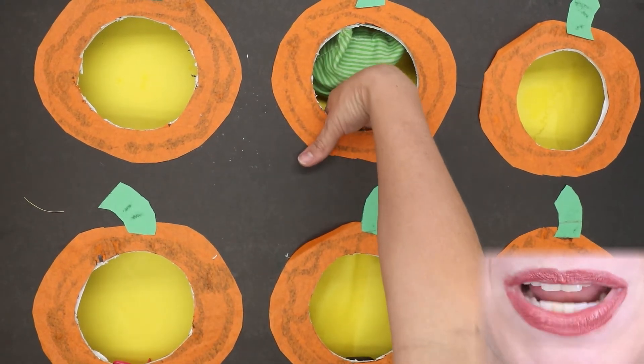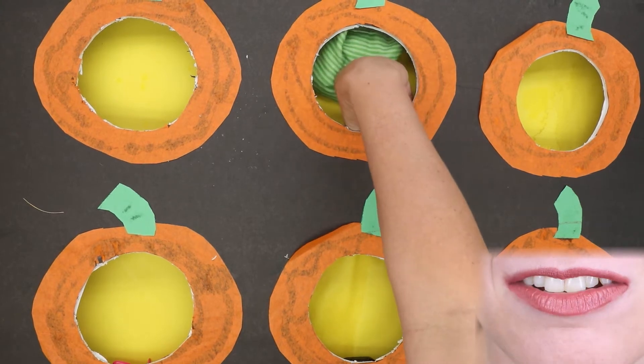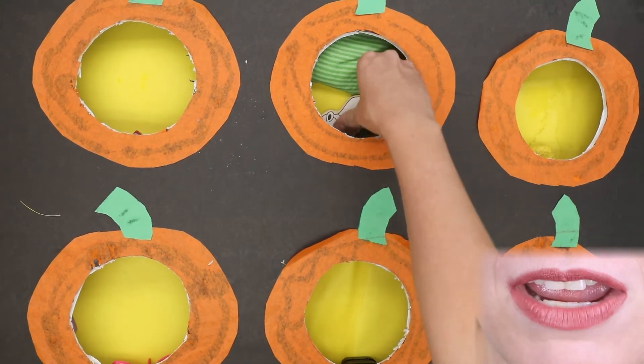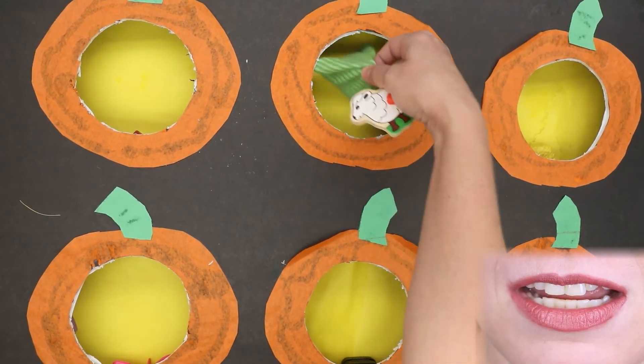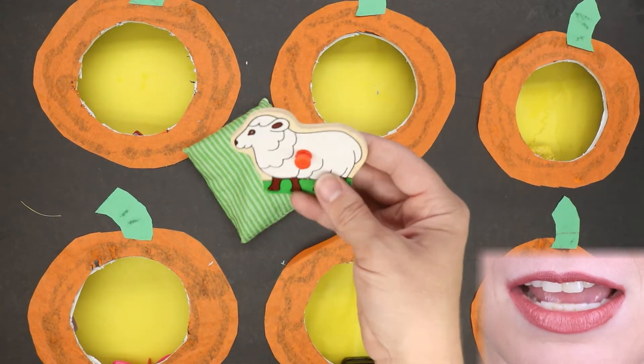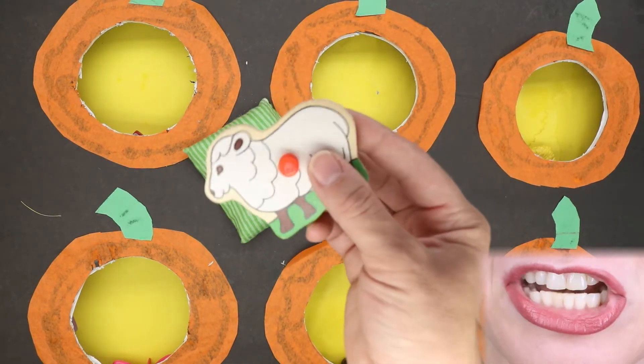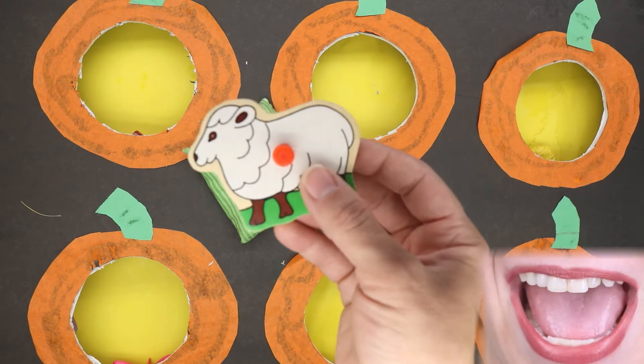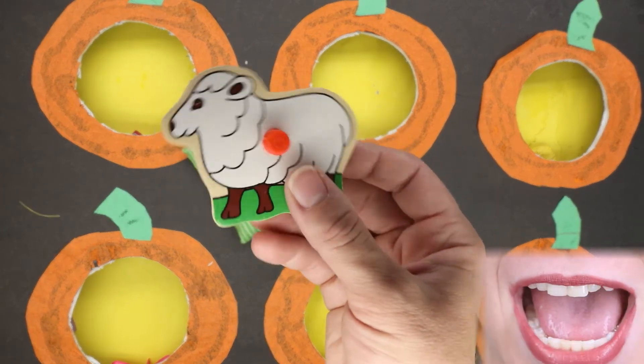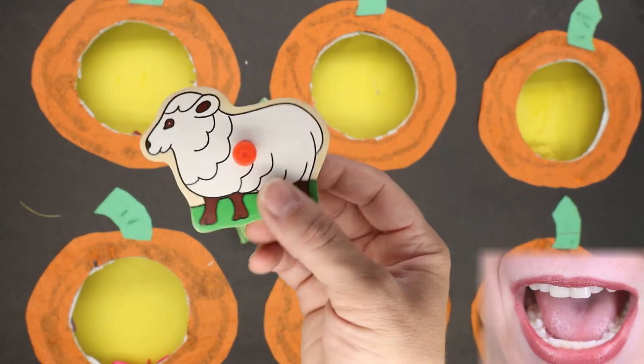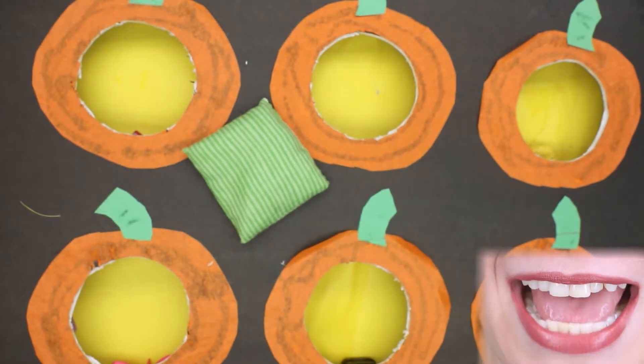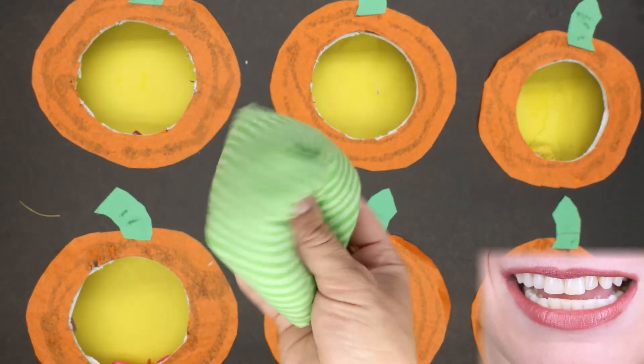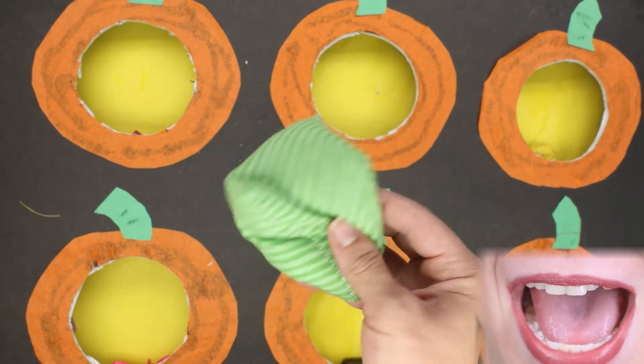What's in this hole? What did we find? We found a sheep. And sheep say baa, baa, baa. The sheep says baa. Say baa with me, baa.